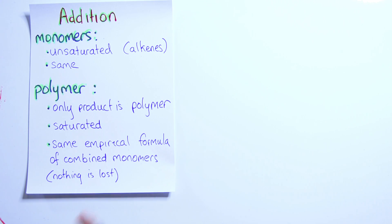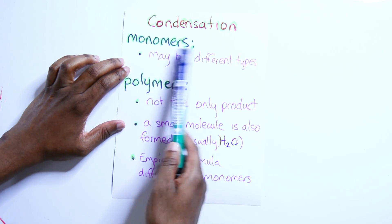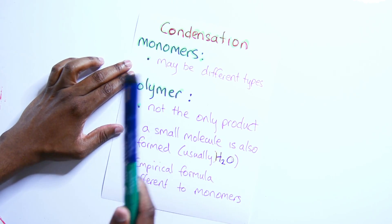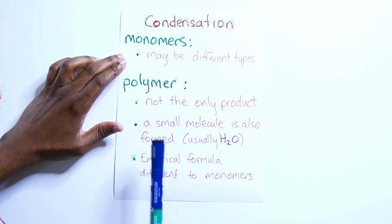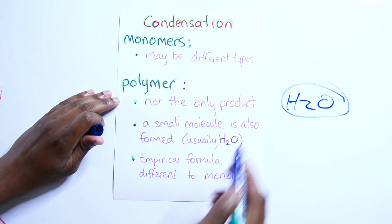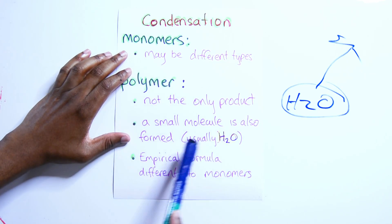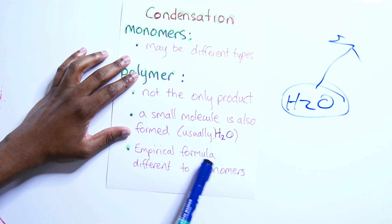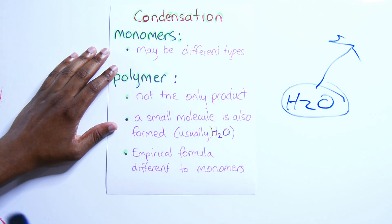The empirical formula of the polymer is the same as the combined monomers — nothing is lost. If you start with 100 carbons, you end with 100 carbons. In condensation polymerization, the monomers may be different types. The polymer is not the only product — a small molecule like H₂O is also produced each time monomers join. The empirical formula of the polymer differs from the monomers because atoms are lost in the water.